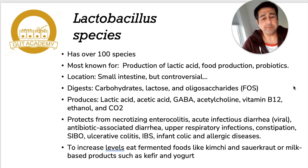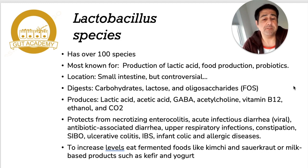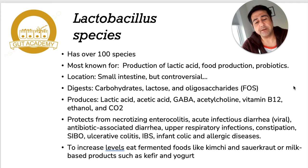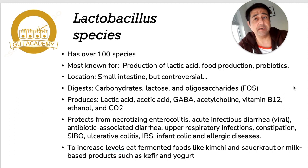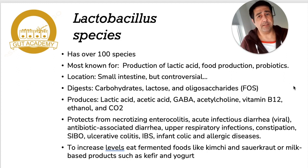Lactobacillus fermentum is considered part of the L. reuteri group and has also been found in many vegetable and dairy ferments. One of the most interesting things about L. reuteri is that it produces antimicrobial compounds called reuterin and reutericyclin. These have the ability to kill other microbes — essentially coming armed with their own antibiotics to wipe out bacteria in their niche and create an environment for themselves.